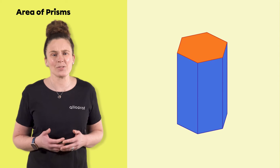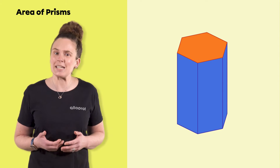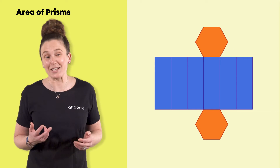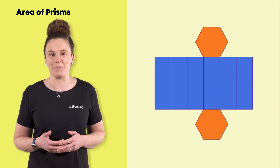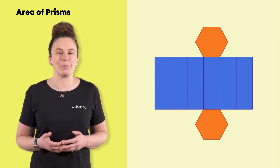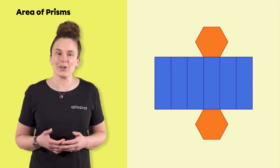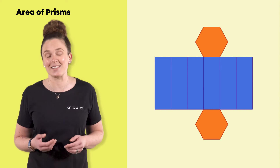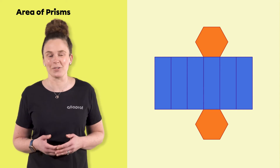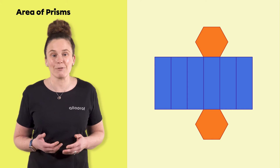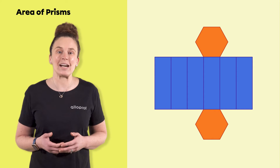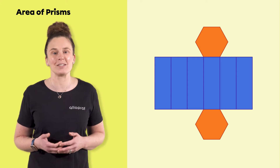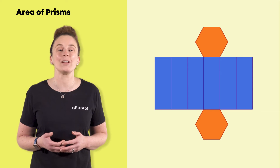To help us find the area of a prism, we can decompose it — that is, make it two-dimensional. As we can see in the example, the regular hexagonal prism is made up of two hexagons and six rectangles. Therefore, we can calculate the area of each plane figure that composes it to find its total area.